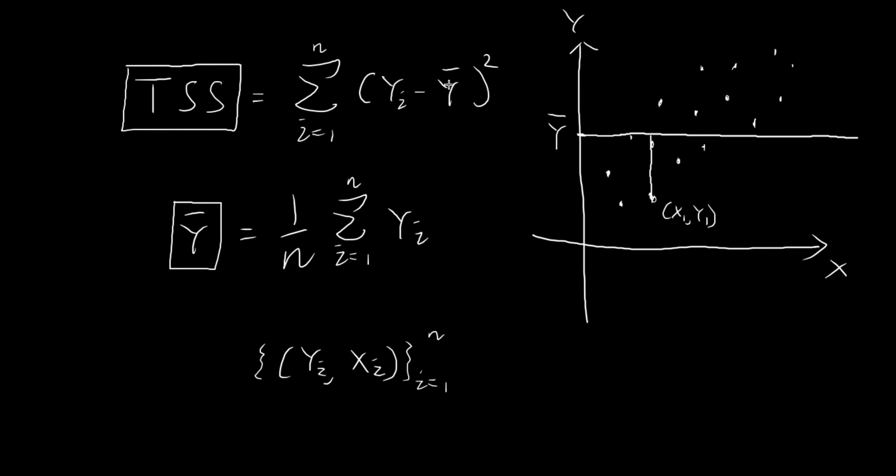So you can kind of interpret yi minus the sample mean of y as the distance between each individual data point and the horizontal line that you see over here. So the total sum of squares is really just taking all these distances that you see over here, all these distances between the individual data points and this horizontal line. So we're going to take all these distances, and then we're going to square them, and then we're going to add them up. And the sum of all these distances square will be called the total sum of squares.